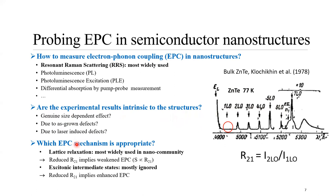Then, which electron-phonon coupling mechanism is appropriate? One theory uses lattice relaxation, and this is most widely used in the nano community. In this theory, a reduced 2LO-to-1LO ratio would imply a weakened electron-phonon coupling. The other theory uses excitonic states as intermediate states for the Raman scattering. Therefore, this theory has been mostly ignored in the community.